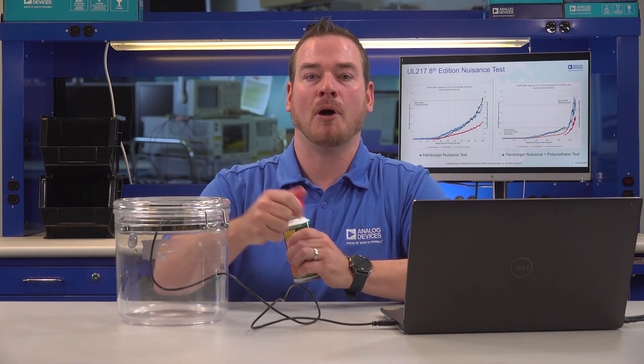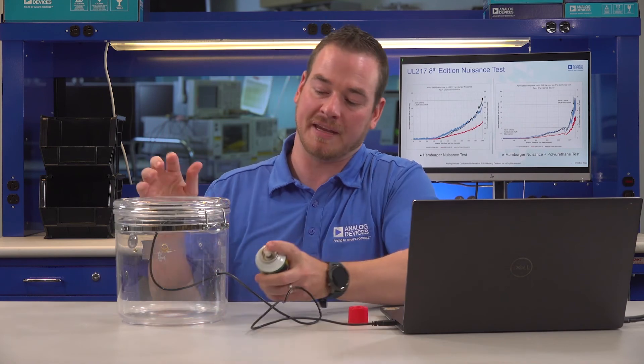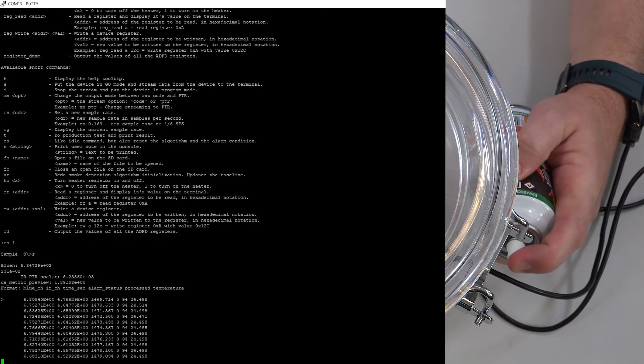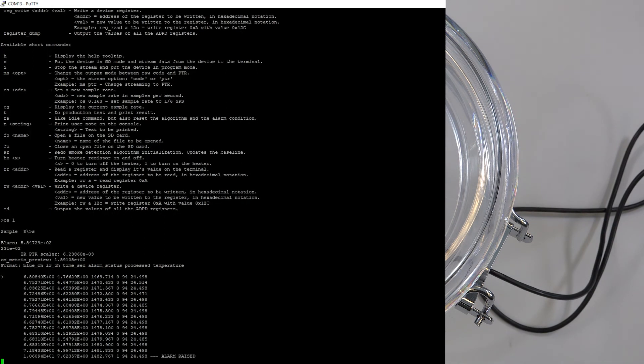And I'm going to spray a small amount of the canned smoke through the same hole which contains the USB cable. Now if you look at the serial terminal, you'll see that the readings are starting to spike.